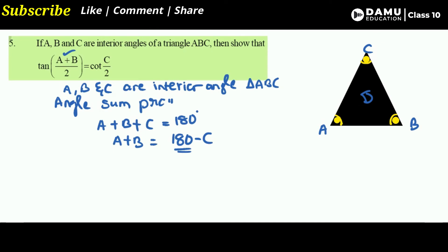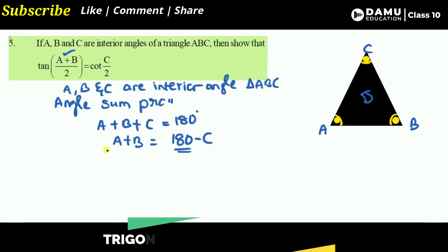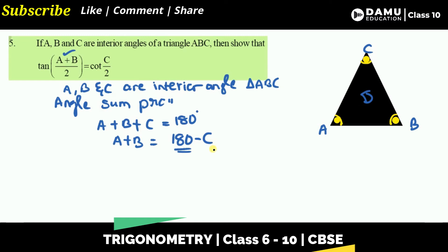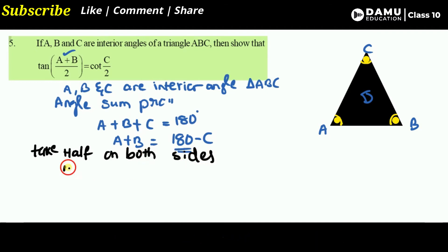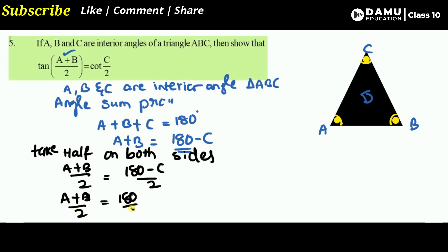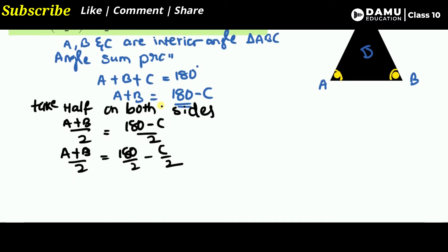Now let's apply the operation of taking half on both sides. So A plus B by 2 will be equal to (180 minus C) by 2, which gives us A plus B by 2 equal to 180/2 minus C/2, that is 90 minus C/2.